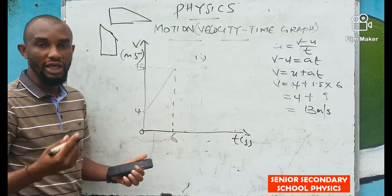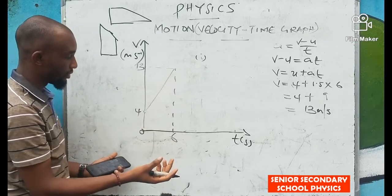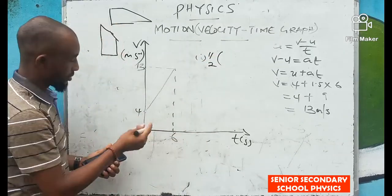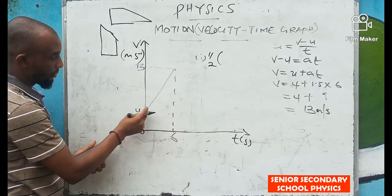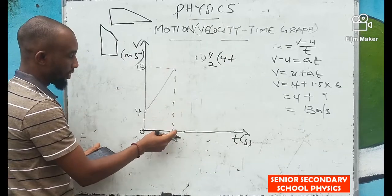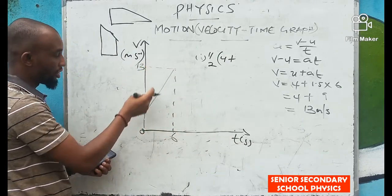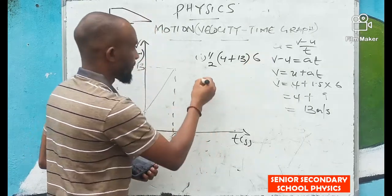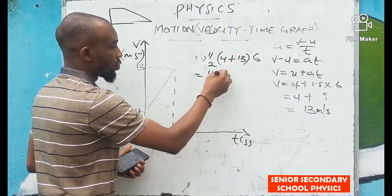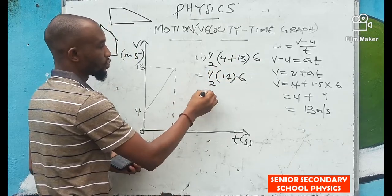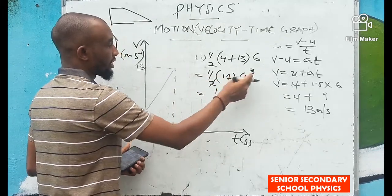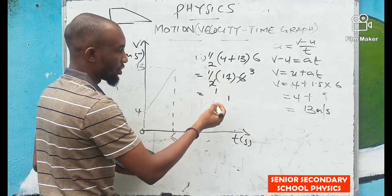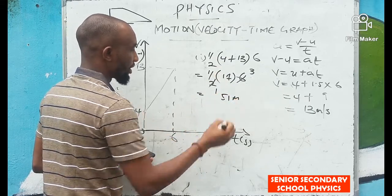The trapezium can appear in different orientations but the formula is the same. Solving for the area: ½ × (4 + 13) × 6 = ½ × 17 × 6 = ½ × 102 = 51 meters. So the total distance traveled in 6 seconds is 51 meters.